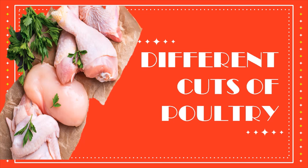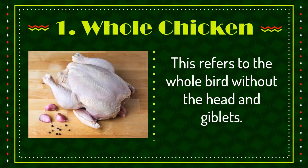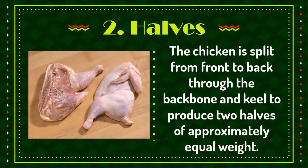Different cuts of poultry. Whole chicken refers to the whole bird without the head and giblets. The chicken is split from front to back through the backbone and keel to produce two halves of approximately equal weight.